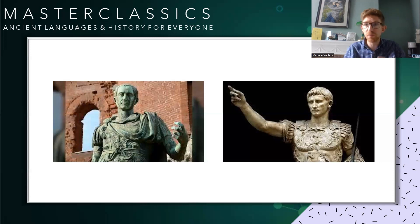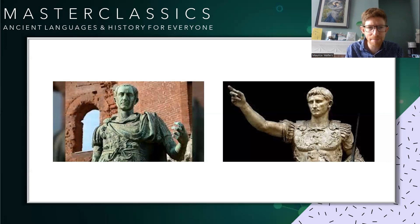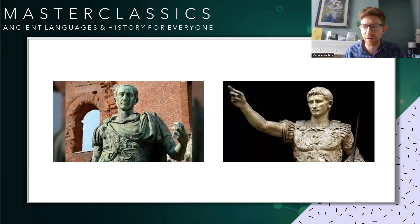Gaius Octavius was really not in the public eye at all — a very young man, only 19. Nobody knew what to make of this, because everybody had been expecting Caesar to give his power to Mark Antony or somebody like that. Instead it goes to Octavian, and this puts the whole situation into a really difficult place. Rome goes into turmoil. The assassins had come up with the idea of killing Caesar but had no real escape plan or idea of what would happen next.